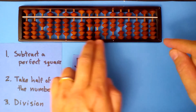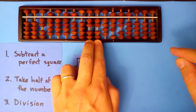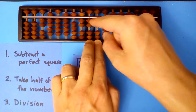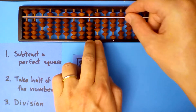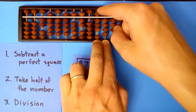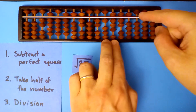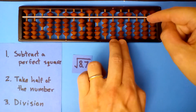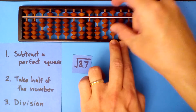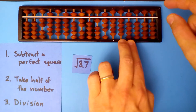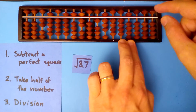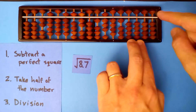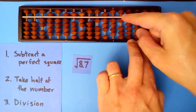2.9 into 22, 7 times. 7 times 2 is 14, 7 times 9 is 63, 7 times 4 is 28, 7 times 9 is 63, 7 times 5 is 35, 7 times itself is 49. We subtract 24.5.